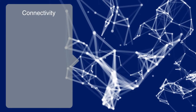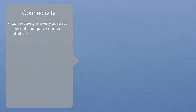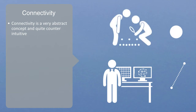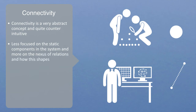Connectivity is really a very abstract concept, and in many ways it is quite counter-intuitive, because it really requires us to see things in a different way. Network analysis is a very practical tool, but it is also a paradigm. It gives us a more appropriate way of looking at these highly interconnected systems, one that is less focused on the static components in the system, and more on the nexus of relations and how this shapes and defines the components. This is a very different way of seeing things to our traditional analytical approach that is central to understanding this networked world.